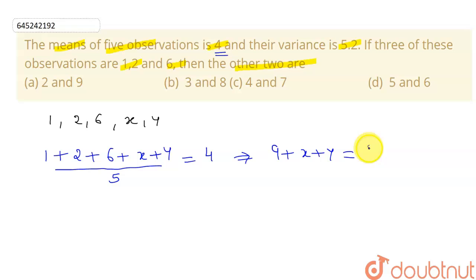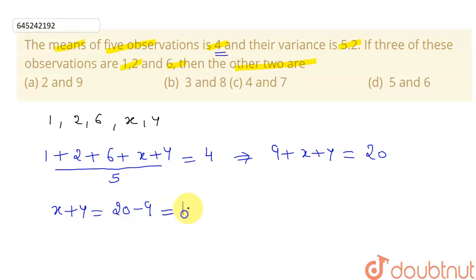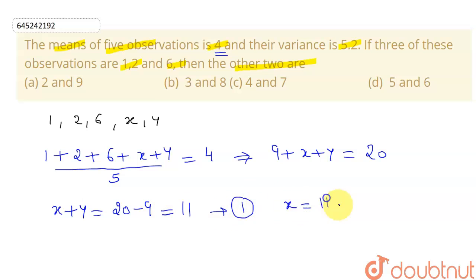So nine plus x plus y equals four times five, which is twenty. From here, x plus y equals twenty minus nine, which equals eleven. Let this be my first condition. From this, I can write x equals eleven minus y.